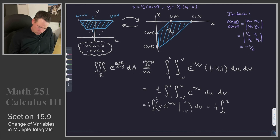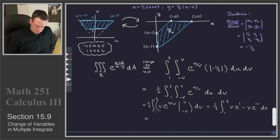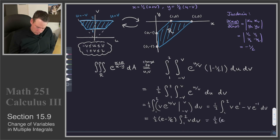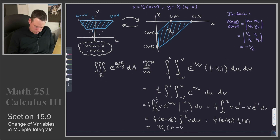So that's one half the integral from 1 to 2. We get v times e to the 1 minus v times e to the negative 1, dV. That gives us e minus 1 over e as a constant that can come out front, times the integral of v from 1 to 2. So that's one half times (e minus 1 over e) times one half v squared, giving one half of (4 minus 1), or 3. This becomes three quarters times (e minus 1 over e).